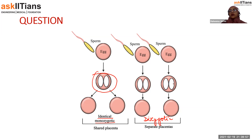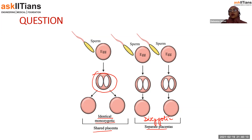The sex of the zygotes in dizygotic twins can be the same or different. Monozygotic twins share the same placenta and have a single umbilical cord, while dizygotic twins have two placentas and two umbilical cords.